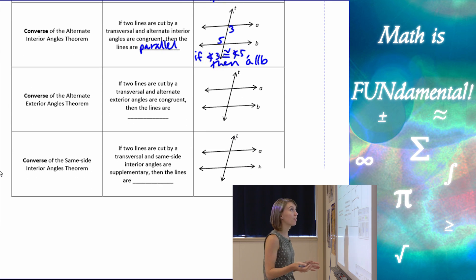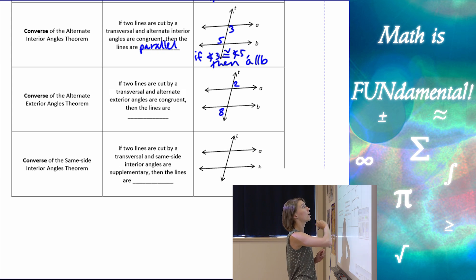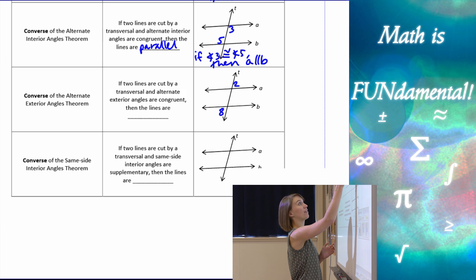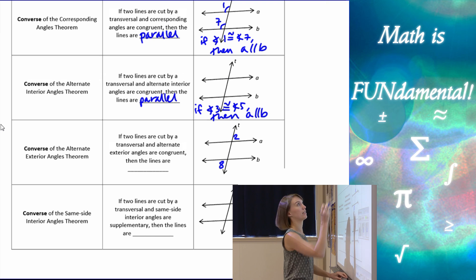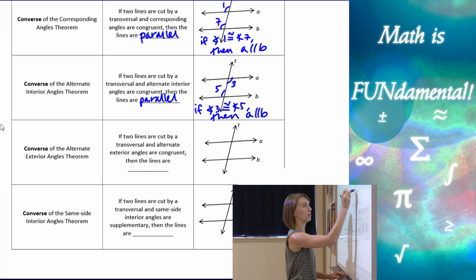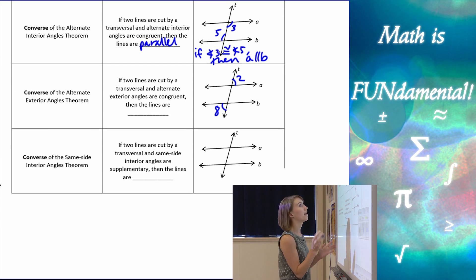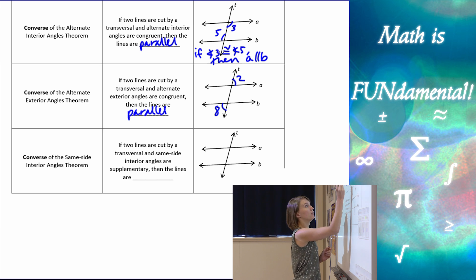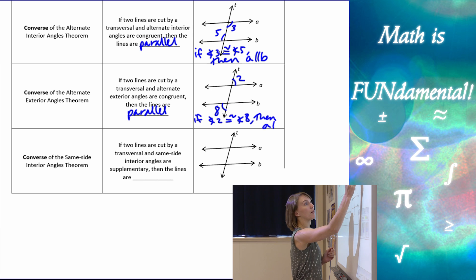The converse of the alternate exterior angle theorem: let's look at two exterior angles, angles two and eight. So if I have two lines, A and B, cut by a transversal, and alternate exterior angles are congruent — I forgot to mark the angles congruent in the last example, so let's mark angles three and five congruent, and in this example mark angles two and eight congruent — then I can say that the lines are parallel. So if angle two is congruent to angle eight, then A is parallel to B.